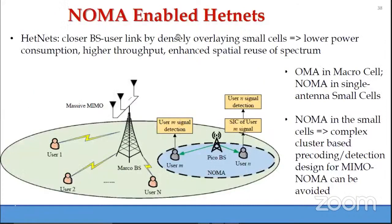NOMA can also be combined with HetNet. Heterogeneous networks (HetNet) have different layers: macro-cells, micro-cells, pico-cells, and femto-cells — one macro-cell overlaid with a large number of small cells. With such heterogeneous networks, because the base station is closer to the user within the small cell, we have low power consumption, high throughput, and enhanced spatial reuse of the spectrum.